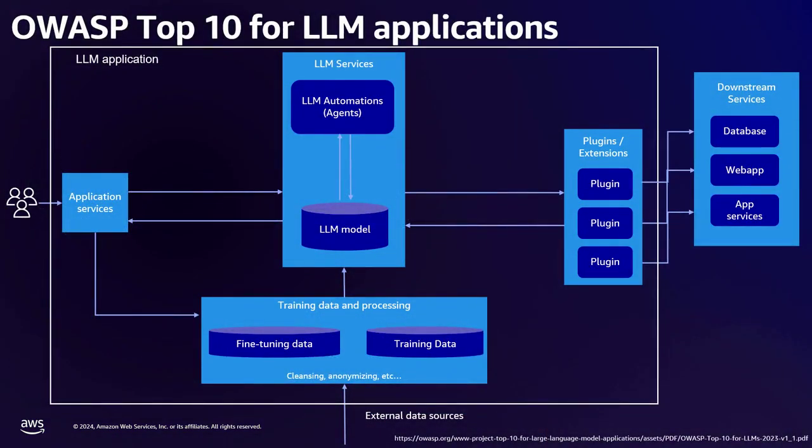I'm going to start with this diagram, which is a notional diagram of what a generic LLM-based application might look like. We have the application services on the left-hand side — that's what your users are going to be logging into with a web service. You've got the training data that leads into the LLM model in the middle of the picture, with fine-tuning data and base training data leading into the model weights for that LLM model.